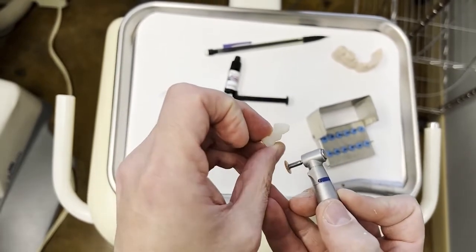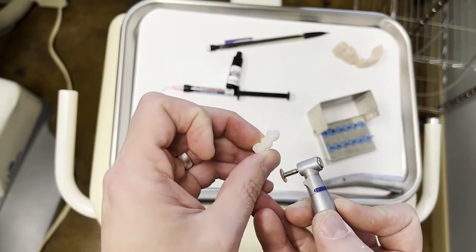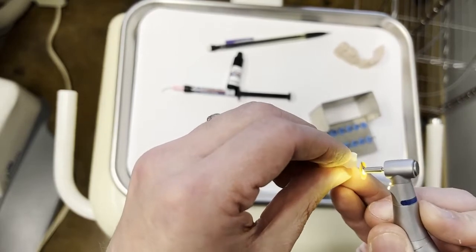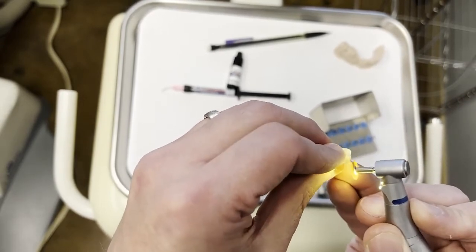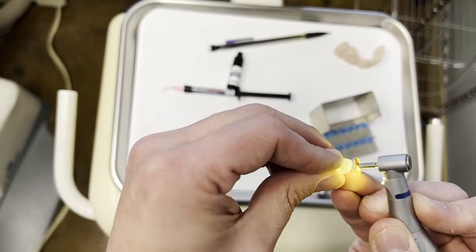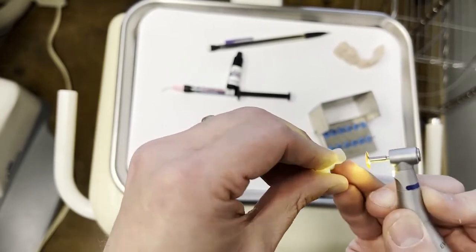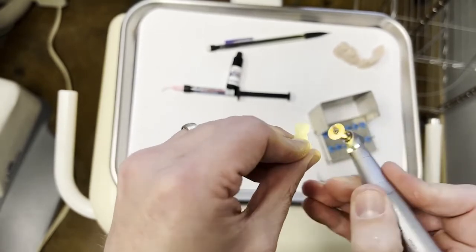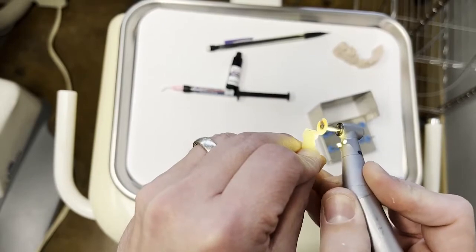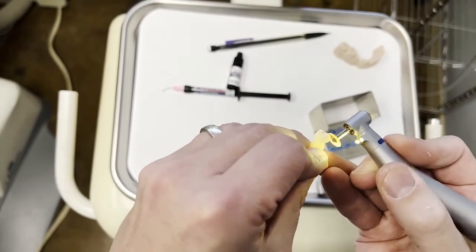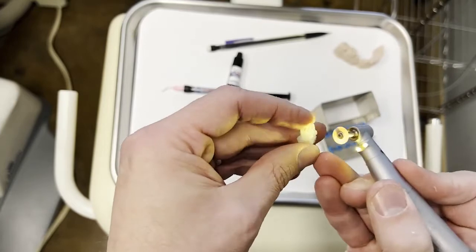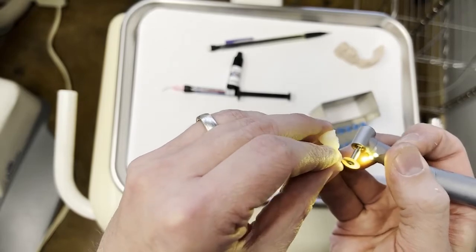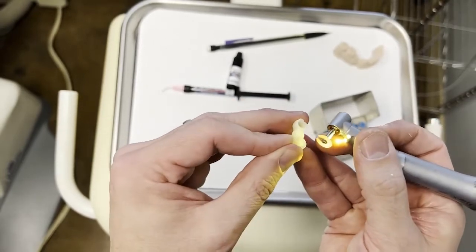So now you can see the difference there. We have much better contours there. Now let's work over here. Same thing. We're just going to kind of thin that area right around the contact, below it and around it. And so you still have a little bit of flash over here on this angle. And a disc does a really nice job of thinning that material out. I'm getting rid of that flash.